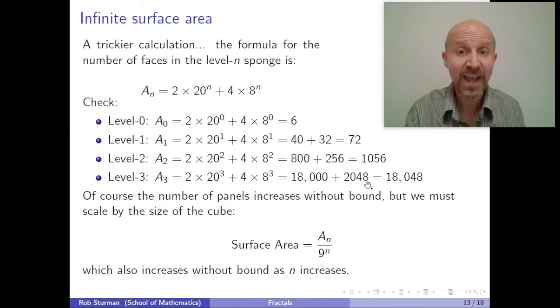We need to scale the number of faces that we see by the volume of the cube. And so we take this expression for A_N and divide it by nine to the N. And you can see that because I've got a 20 to the N here, when I divide it by nine to the N, I still have something which increases without bound as N increases. So the surface area really is infinite. It's extraordinary, infinite surface area, but zero volume.